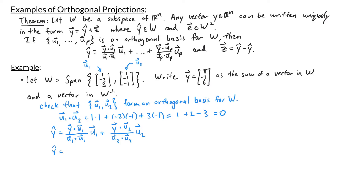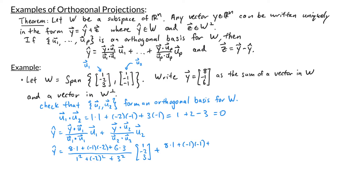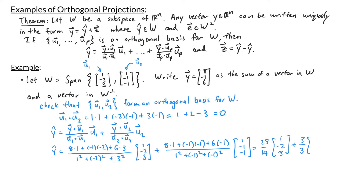y-hat equals (y·u1 / u1·u1) times u1 plus (y·u2 / u2·u2) times u2. Computing y·u1: 8·1 + (-1)·(-2) + 6·3, divided by u1·u1: 1² + (-2)² + 3². Then adding (y·u2 / u2·u2) times u2, where y·u2 is 8·1 + (-1)·(-1) + 6·(-1) and u2·u2 is 1² + (-1)² + (-1)². Simplifying, I get 28/14 times u1 plus 3/3 times u2, so y-hat equals 2·(1,-2,3) + 1·(1,-1,-1), which is (3, -5, 5).